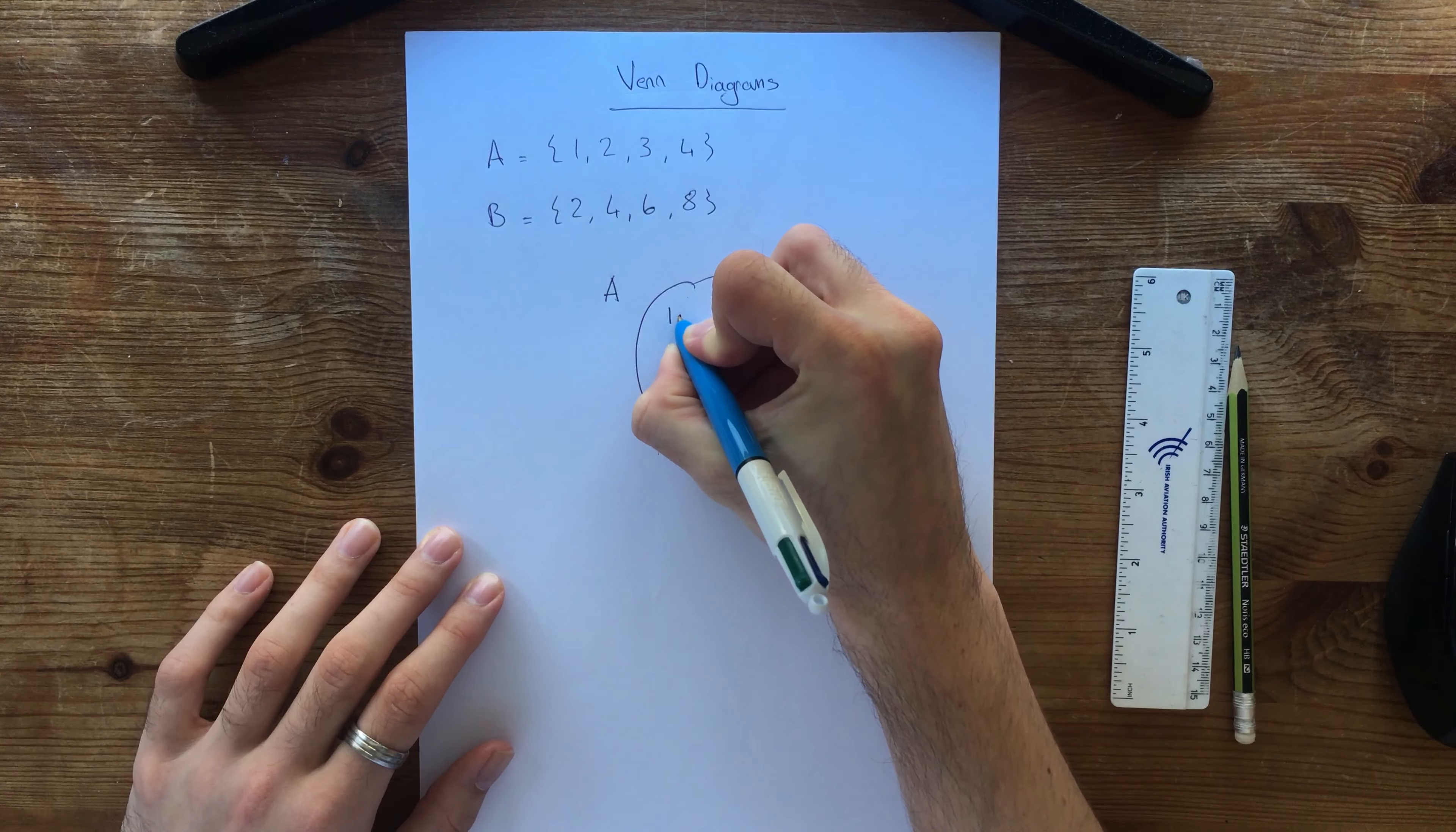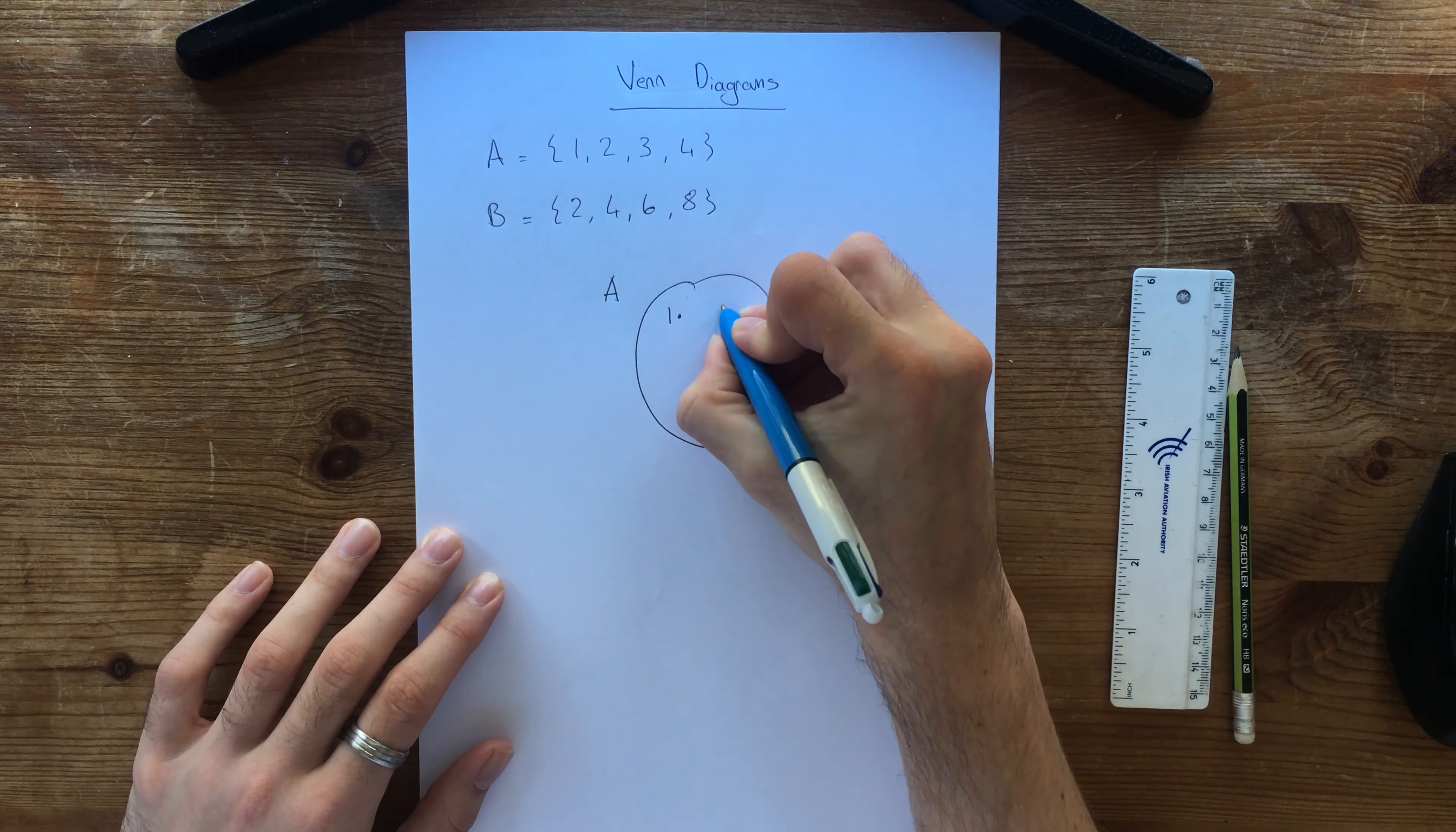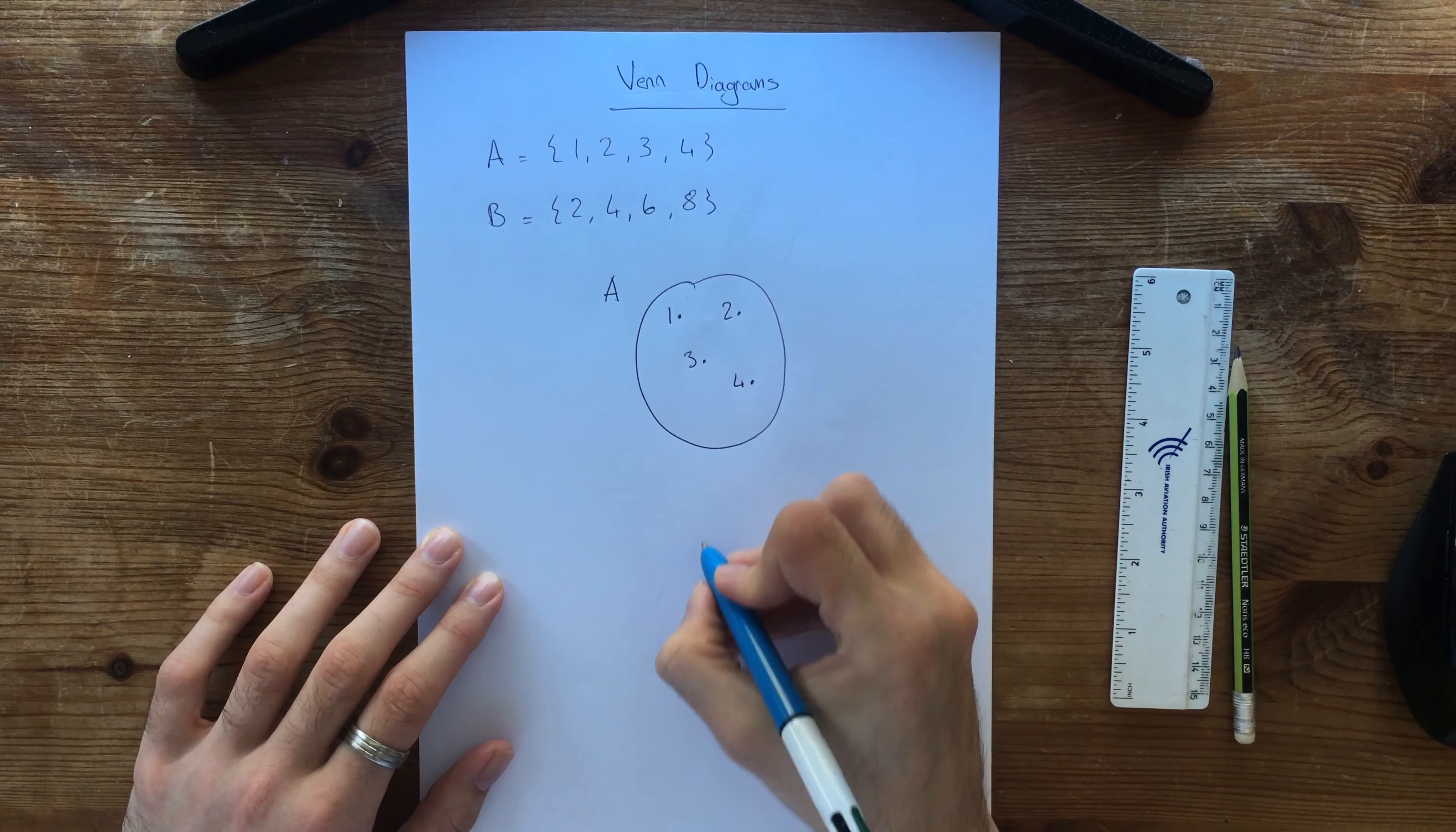I'm going to put an A up here so I know that it's A and I'm going to put all the elements inside of A. So what you do is you write the letter or the number with a little dot beside it. And 2, 3 and 4.